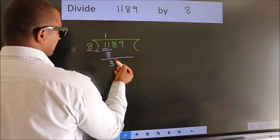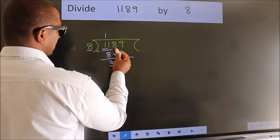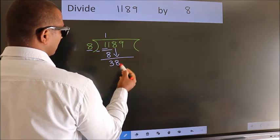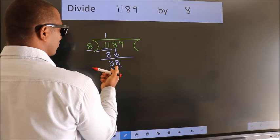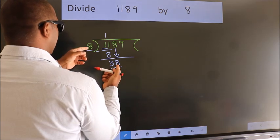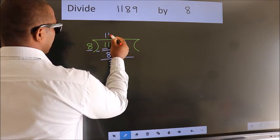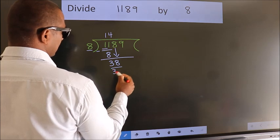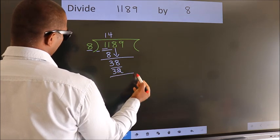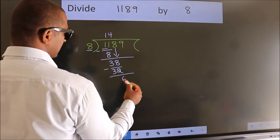After this, bring down the beside number. So, 8 down. So, 38. A number close to 38 in the 8 table is 8 fours 32. Now, we subtract. We get 6.